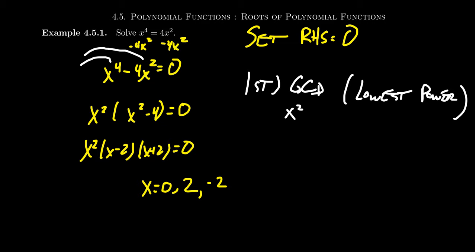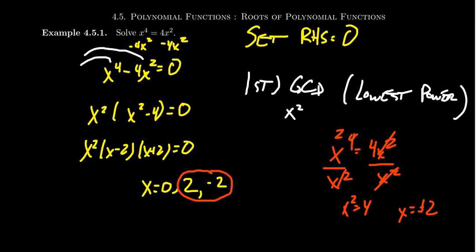I do want to mention that a temptation many people have in this situation is x to the fourth equals 4x squared. If you have this equation, the temptation many people have is actually not to factor out the GCD, but to divide by it. If you divide by x squared, you then end up with simplifying this thing. You'd be getting x squared equals 4. Taking the square root, you get x equals plus or minus 2, which agrees partially with our solution right here. We got the plus or minus 2, but where did the 0 go?